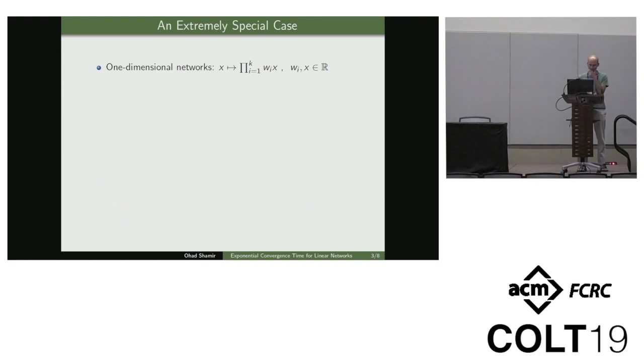So to try and get a sense of things, let's consider an extremely special case of this problem, where we look at networks which are not only linear, they're also one-dimensional. So every matrix WI is just a scalar, and we just look at the product of these on one-dimensional inputs. Moreover, let's suppose we just want to fit a single data point. For example, given the input one, we want the network to predict minus one. And using the squared loss, this boils down to trying to optimize this very complicated optimization problem.